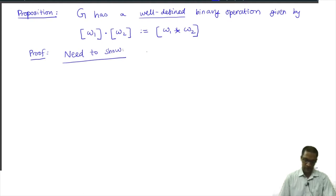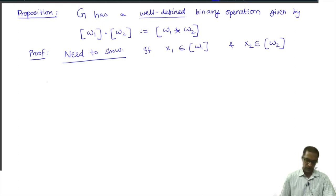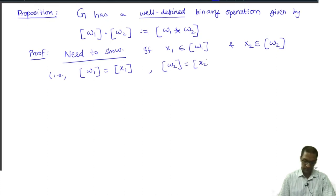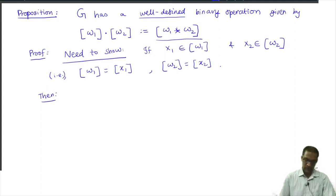What if I pick different representatives? If x1 is another representative, it belongs to this equivalence class, and I pick a different representative x2 from the equivalence class W2. So instead of taking W1 as my representative, I am thinking of x1 as my representative of that class, and similarly I am changing my representative. Suppose I do this, then I need to show that the right-hand side will be the same answer.